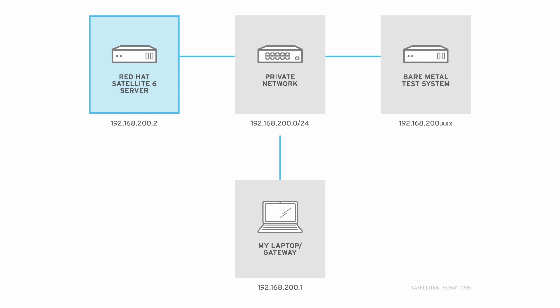For this video series, I'm using a simple three-system setup on an isolated network, using 192.168.200.0/24 for the IP range. One system will be the Satellite server at 192.168.200.2. A second system will be used for bare metal testing.